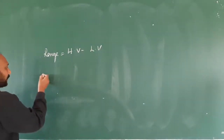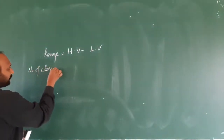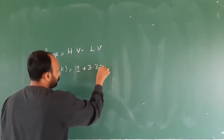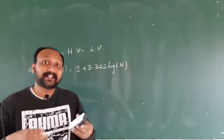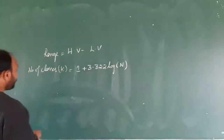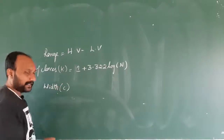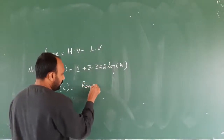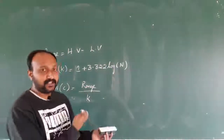After finding the range, next we need to find out how many classes we can accommodate — that is, number of classes. Number of classes is given by the value K: K = 1 + 3.322 × log N. Here N is the total number of data points — we have been given 20 pieces of data, so N = 20. We need to find the log of 20. After finding the K value, next we need to find the width C, where width C = range divided by number of classes K. These are the rules of classification which we need to follow.